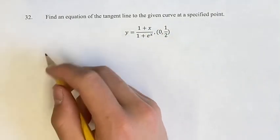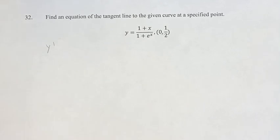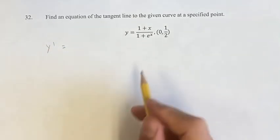The way we're going to do that is first by finding the derivative, because that'll give us the slope of the line. We do that using the quotient rule.